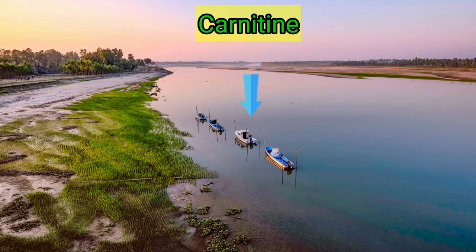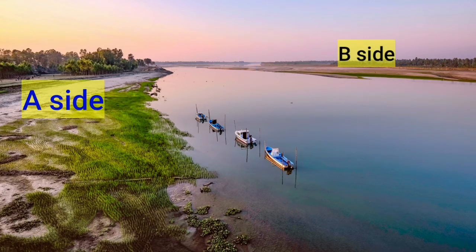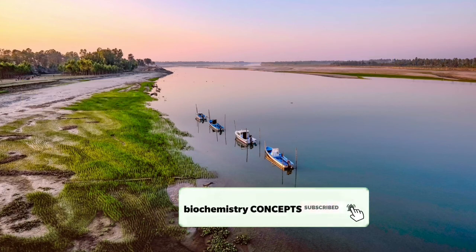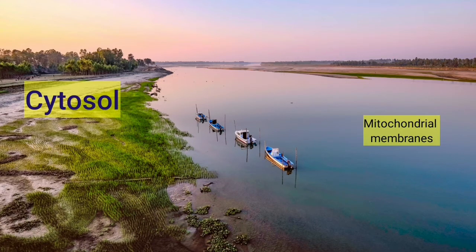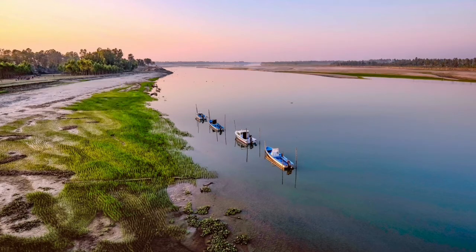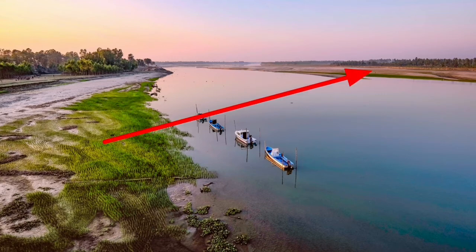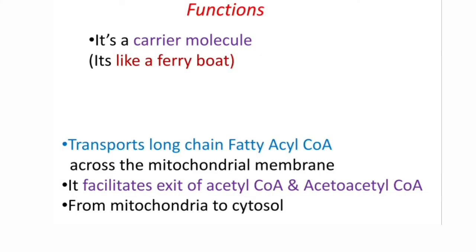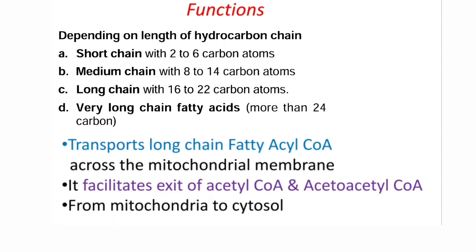To understand the function of carnitine, consider a simple example. In this picture, there is a boat and two ends of a river. A person wants to move from one end to the other using the boat. Here, one end represents the cytosol and the other represents the mitochondria. The fatty acid enters the boat, which carries it from the cytosol to the mitochondria — the transporter here is carnitine. Carnitine also facilitates the exit of acetyl CoA and acetoacetyl CoA from mitochondria to cytosol.